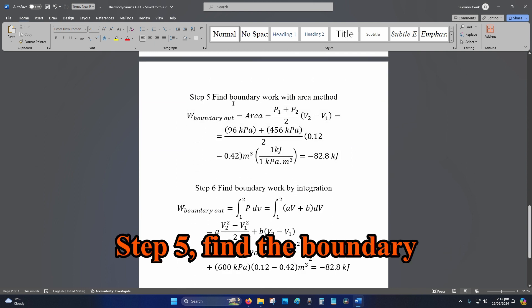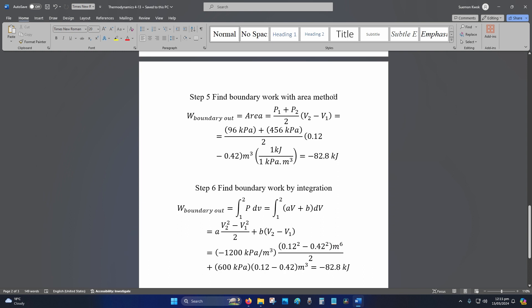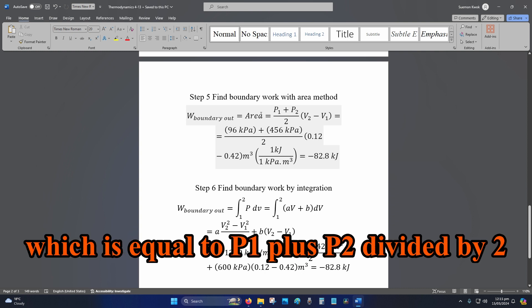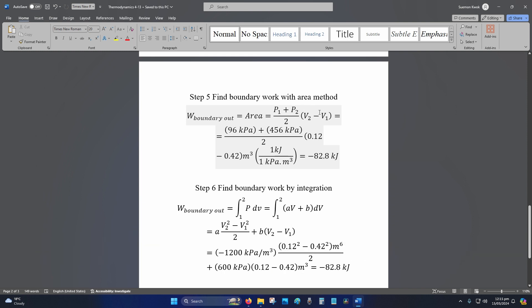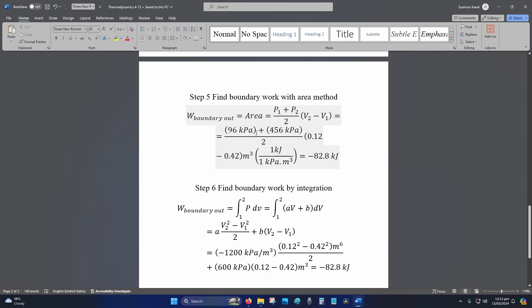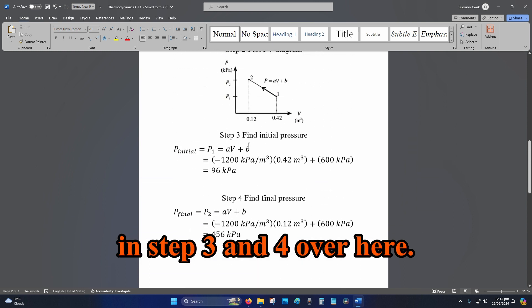Step 5, find the boundary work with the area method. So W boundary out equals the area, which equals P1 plus P2 divided by 2 multiplied by the difference in volume. So we've got 96 kPa plus 456 kPa, that's what you found in step 3 and 4.